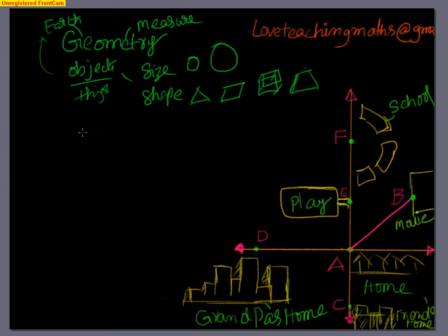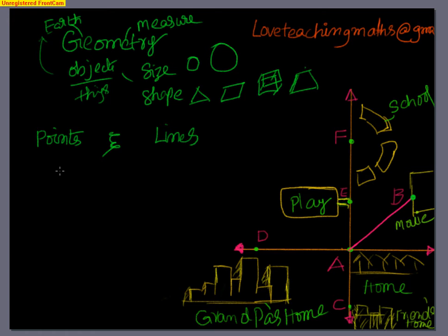What exactly is a point? Let me just write it here — points and lines. A point is a fixed location. Fixed location on what? A point is a fixed location in space, or from a layman's perspective, a point is a fixed location at a particular physical location.